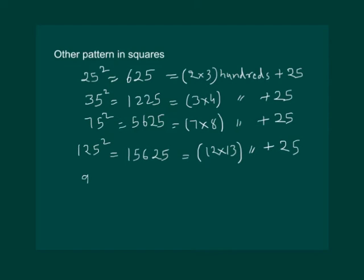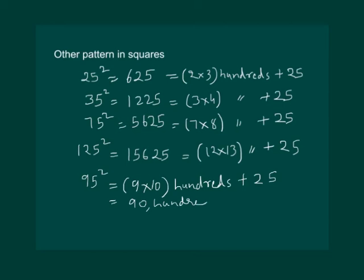Say we have to find the square of 95. Easily we can do 9 into 10, 100 plus 25. That will be equal to 90, 100 plus 25, which is equal to 9000 plus 25, which is equal to 9025.